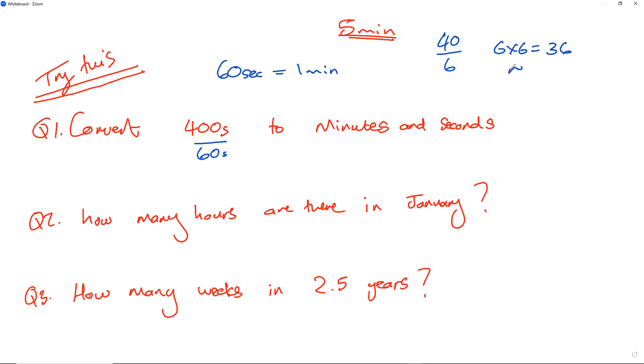There's a remainder of 4, so 400 divided by 60 is going to go into this 6 times and there'll be a remainder of 40 to get to 400.